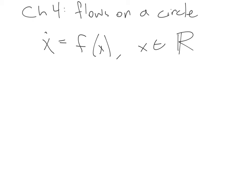But we learned that in these kinds of systems there can't be oscillation, and so we want a simple model of oscillation. That simple model is switching from a flow on a line to a flow on a circle.